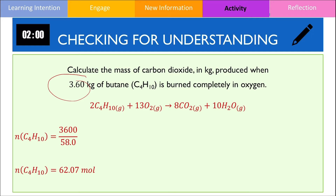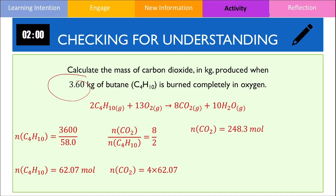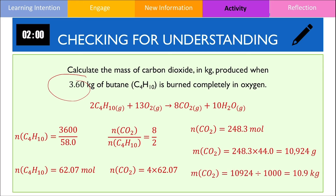We then set up the mole ratios to find the number of moles of carbon dioxide produced. The amount of carbon dioxide should be 4 times the amount of butane, giving 248.3 moles. To convert moles into mass, we multiply the number of moles by the molar mass of carbon dioxide, giving 10,924 grams. Expressing this in kilograms by dividing by 1000 gives 10.9 kg, rounded to 3 significant figures.